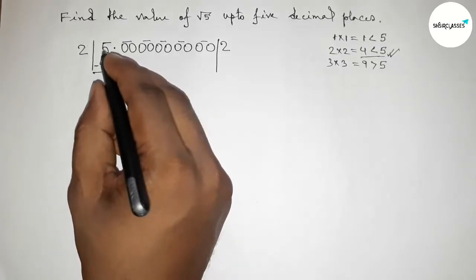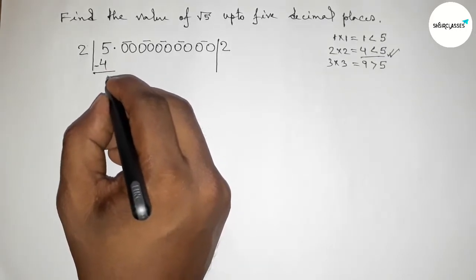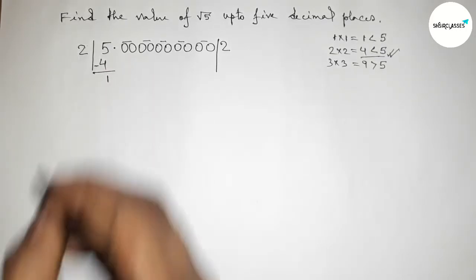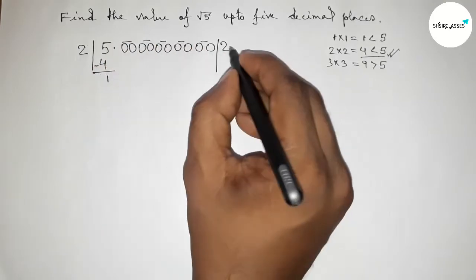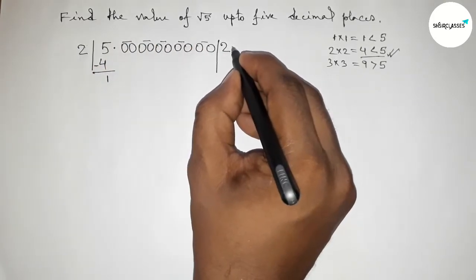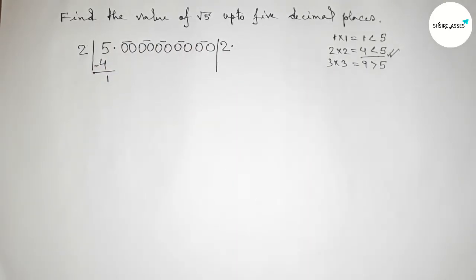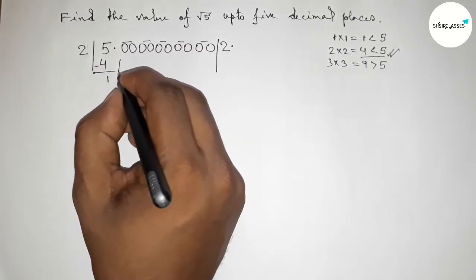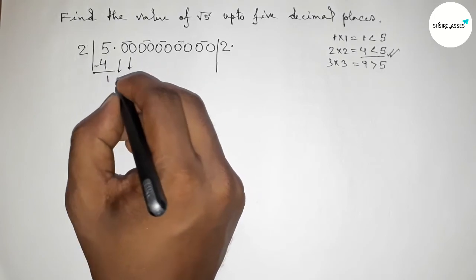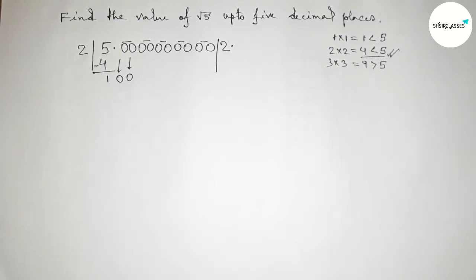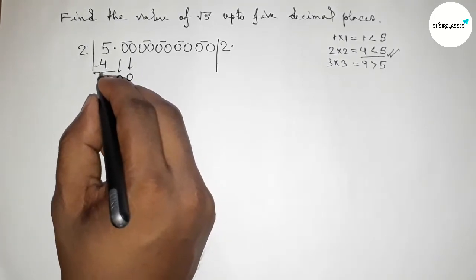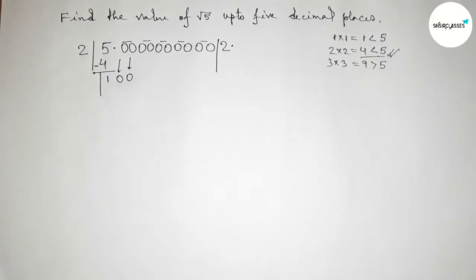Subtracting: from 5 take away 4 gives remainder 1. Now write the decimal point and bring down the first pair of zeros here, drawing the division line.